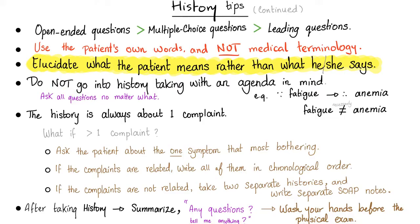Do not go into history taking with an agenda in mind. If the patient has fatigue, don't immediately assume it's anemia — it could be depression, hypothyroidism, or fibromyalgia. If you go in with an agenda, you'll only ask questions related to that agenda. You will never know the diagnosis until you finish the history and physical exam. Ask all questions to all patients, no matter what.